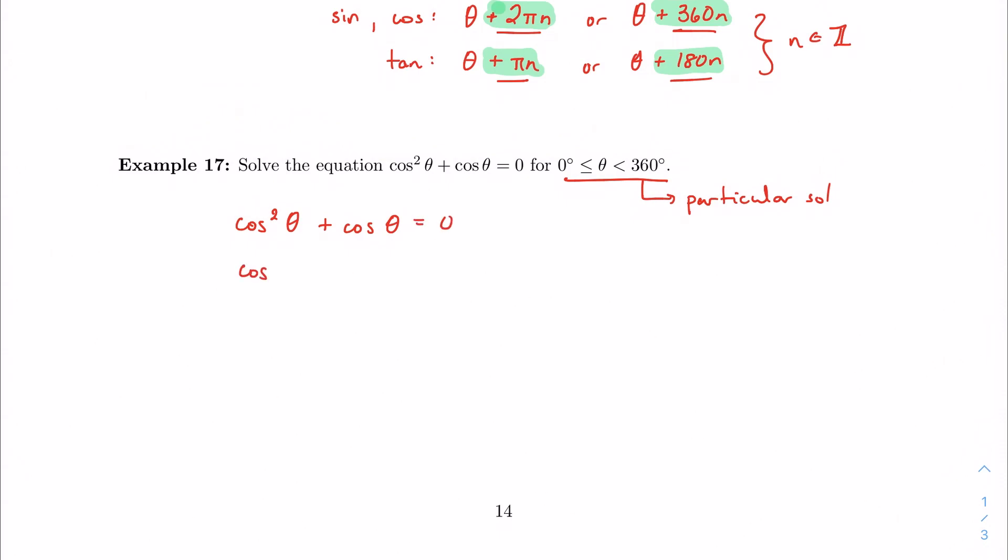Our equation-solving strategies, as normal, apply. So one thing I can do is factor out a common term here. So I have cosine theta, and if I pull out a cosine theta, I'm left with cosine plus 1. And just as we're kind of used to, we have two factors here. So let me split these up.